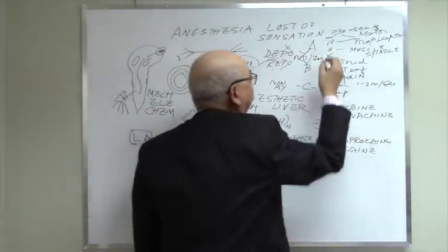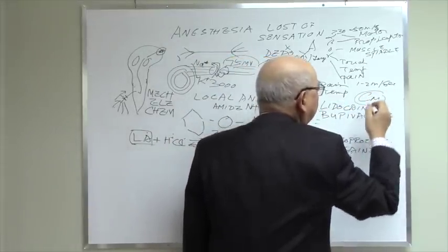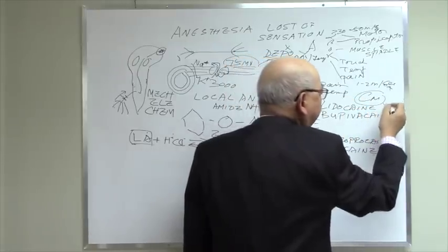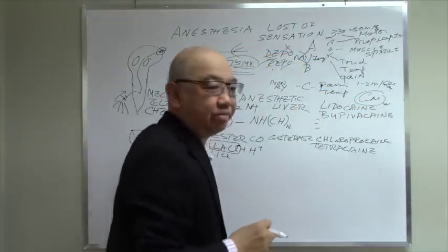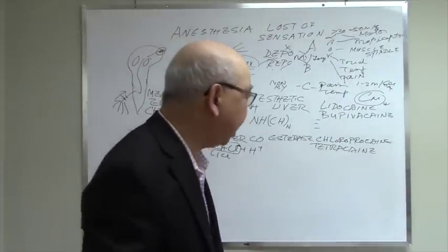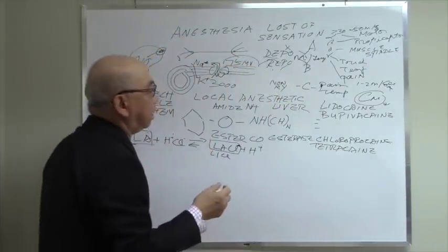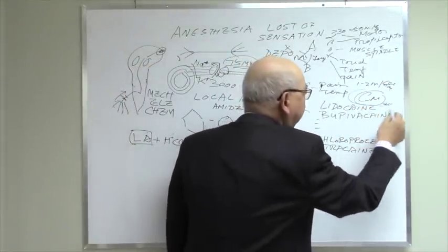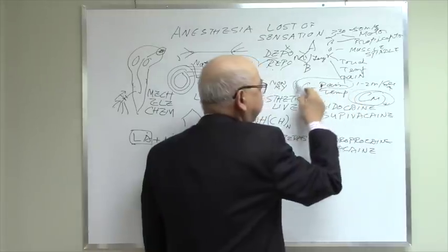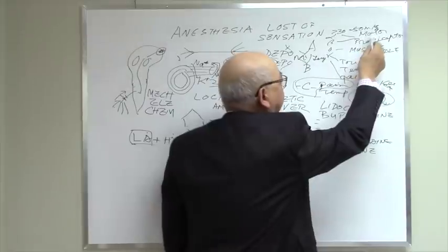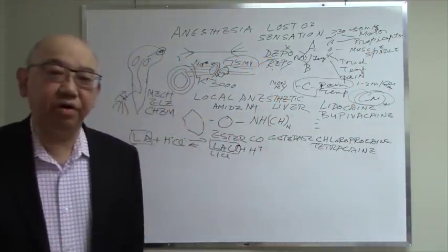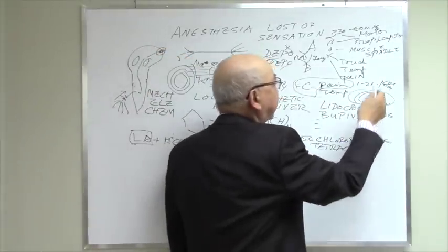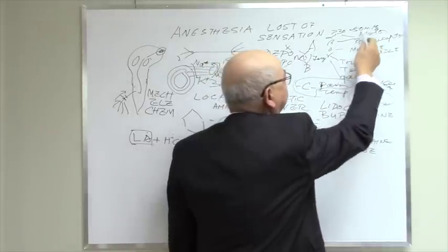Also, larger fibers require a higher minimum concentration of local anesthetic to be blocked, while smaller fibers require a lower minimum concentration. Most nerves are mixed fibers, so when you put local anesthetic onto a nerve, you get different grades of blockage. By controlling the concentration, you can block only pain fibers and leave motor and proprioceptor fibers alone. That is what we use for epidural anesthesia in pregnant women — we use low-concentration local anesthetic to block pain fibers and leave motor fibers intact.